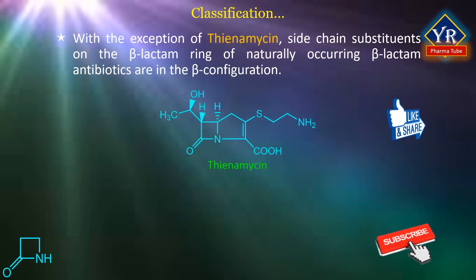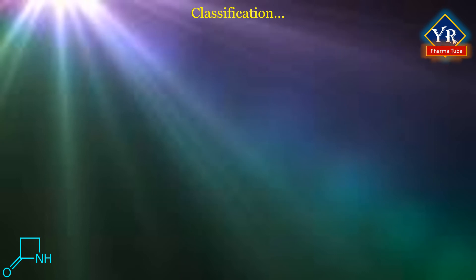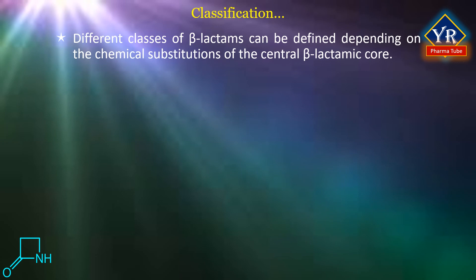With the exception of thienamycin, side-chain substituents on the beta-lactam ring of naturally occurring beta-lactam antibiotics are in the beta configuration. In thienamycin, the side-chain is alpha. As discussed, the stereochemistry of the attachment of the side-chain is of utmost importance to enzyme-beta-lactam interactions. Beta-lactam antibiotics are characterized by the presence of an azetidinone nucleus containing the carbonyl beta-lactam.